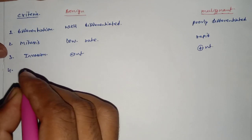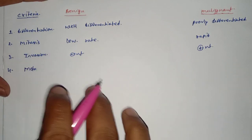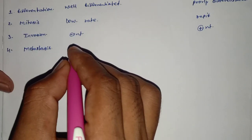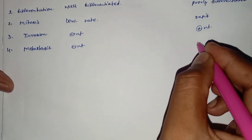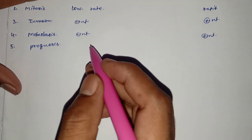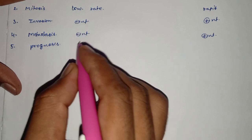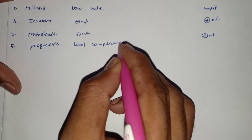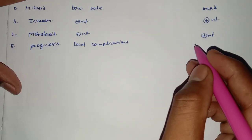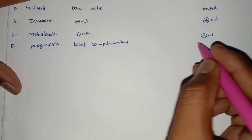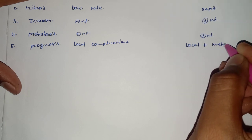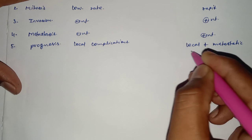Next is metastasis. Metastasis is absent in the benign tumour and present in the malignant tumour. In prognosis, we observe local complications in the benign tumour, and in the malignant tumour there are local plus metastatic complications.